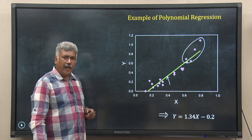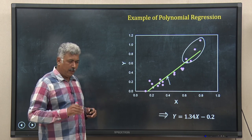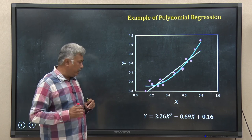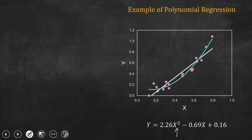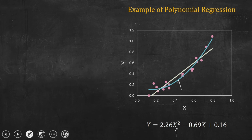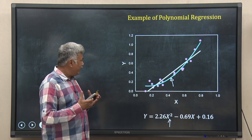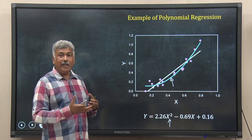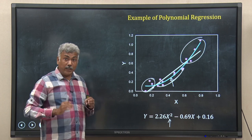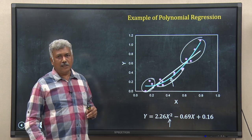Next, on the same data, I used polynomial regression for a quadratic equation — it has an x squared term. The result is y = 2.26x² − 0.69x + 0.16, shown as the blue line. You can see this regression gives a better model. This quadratic line has a much better fit than the straight line, fitting both ends and also capturing the curved area. So a quadratic model is much better for this data than a linear model.